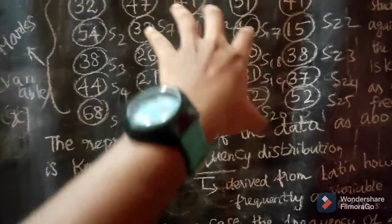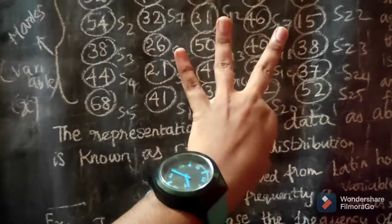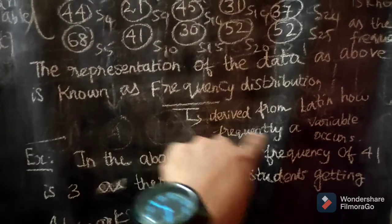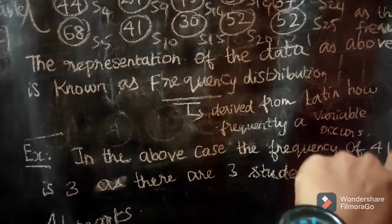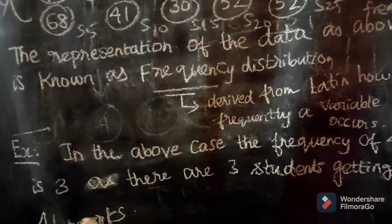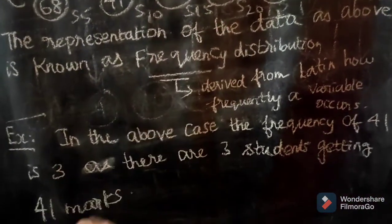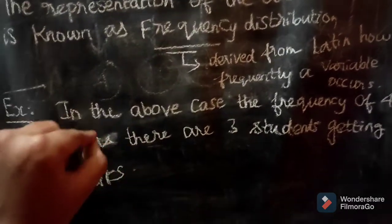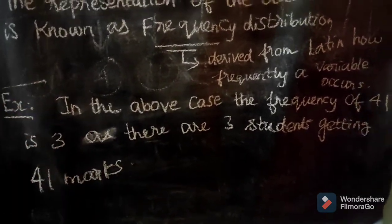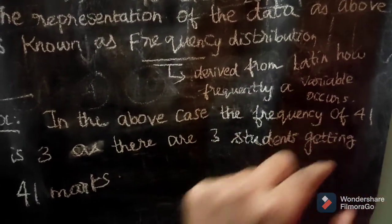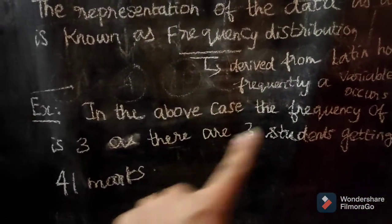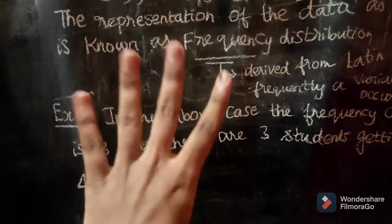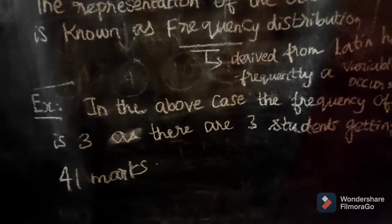41 marks belong to 3 students. So in the above case, the frequency of 41 marks is 3. That means 3 students are getting 41 marks.